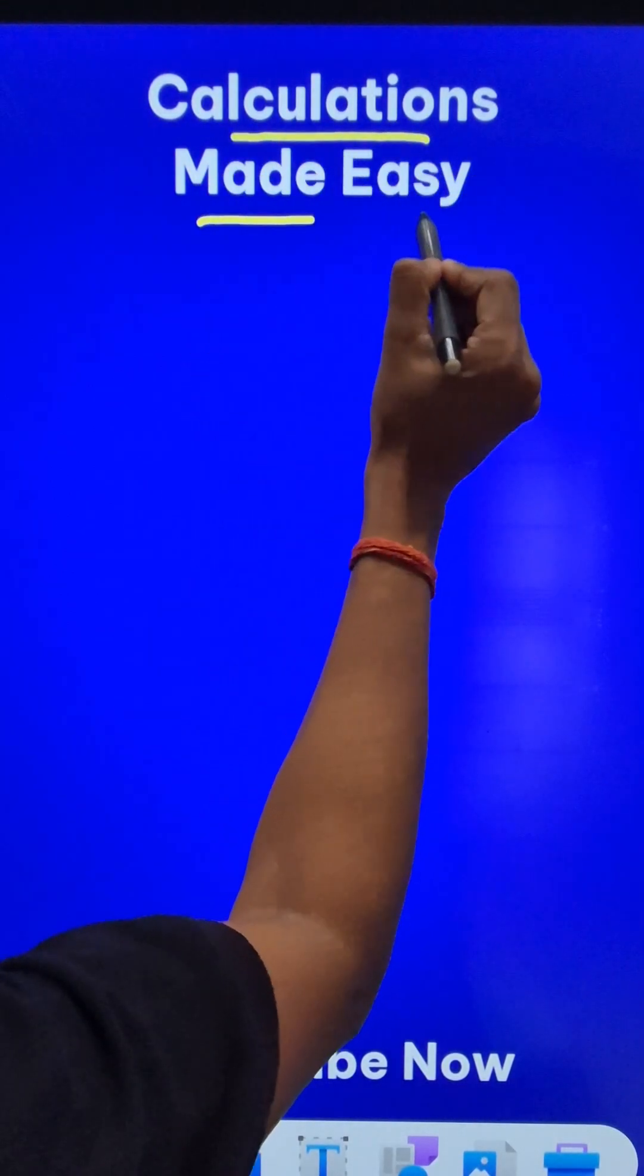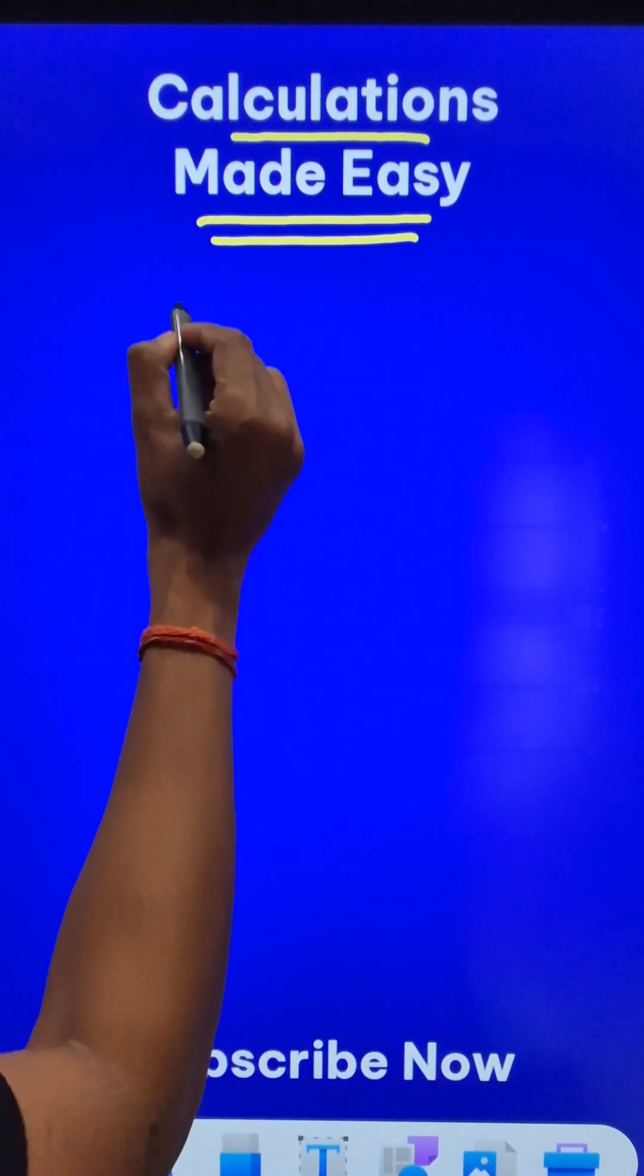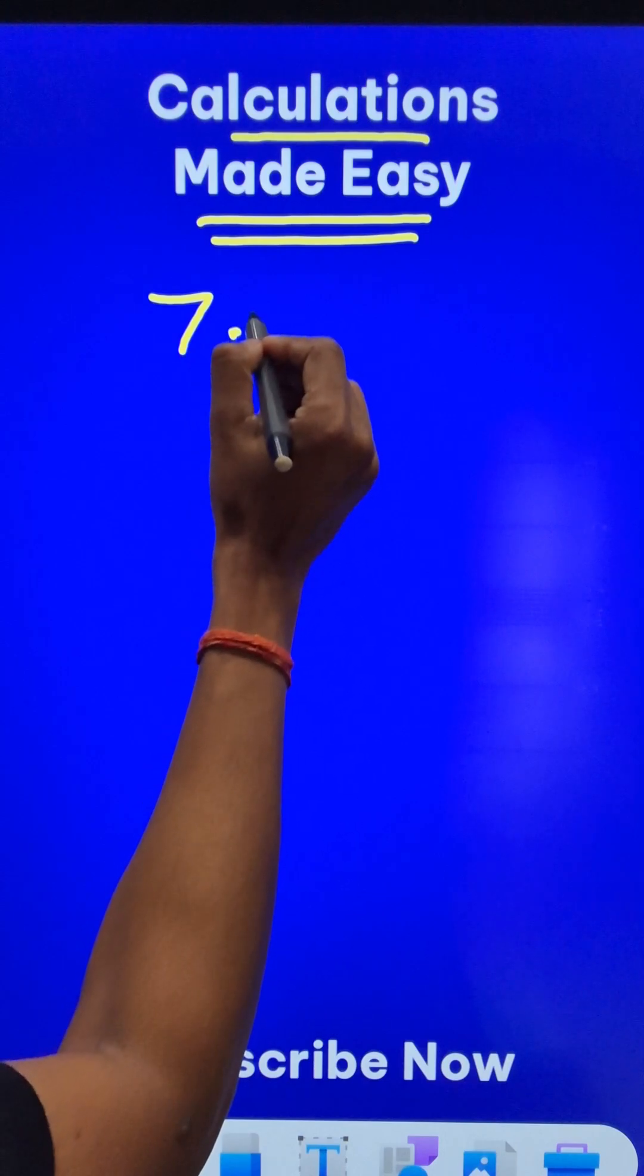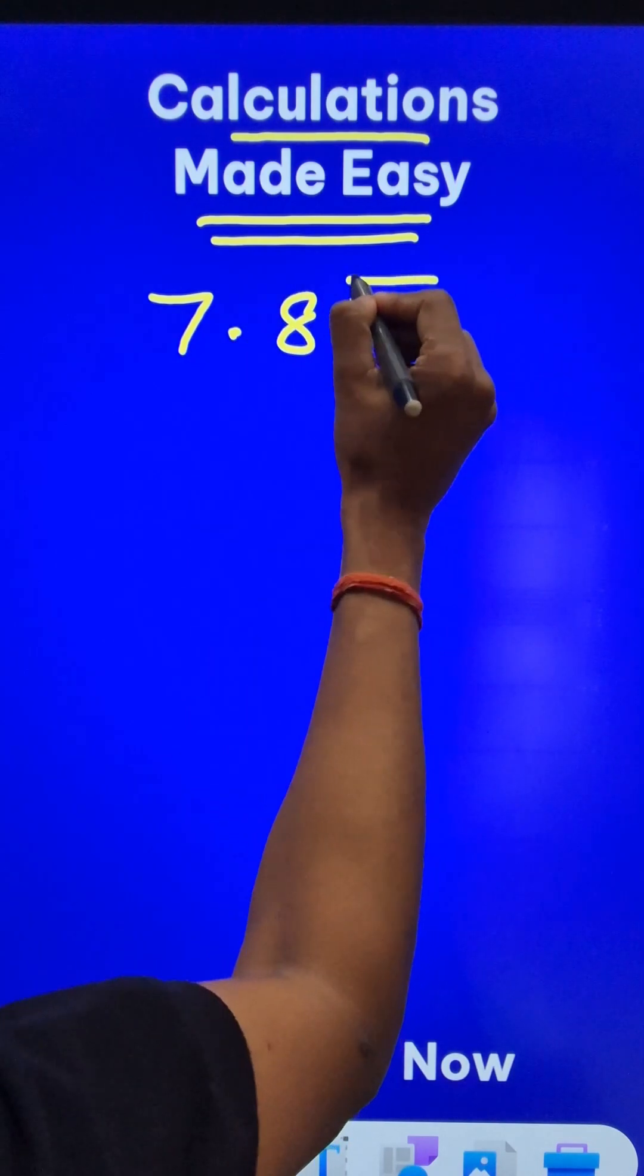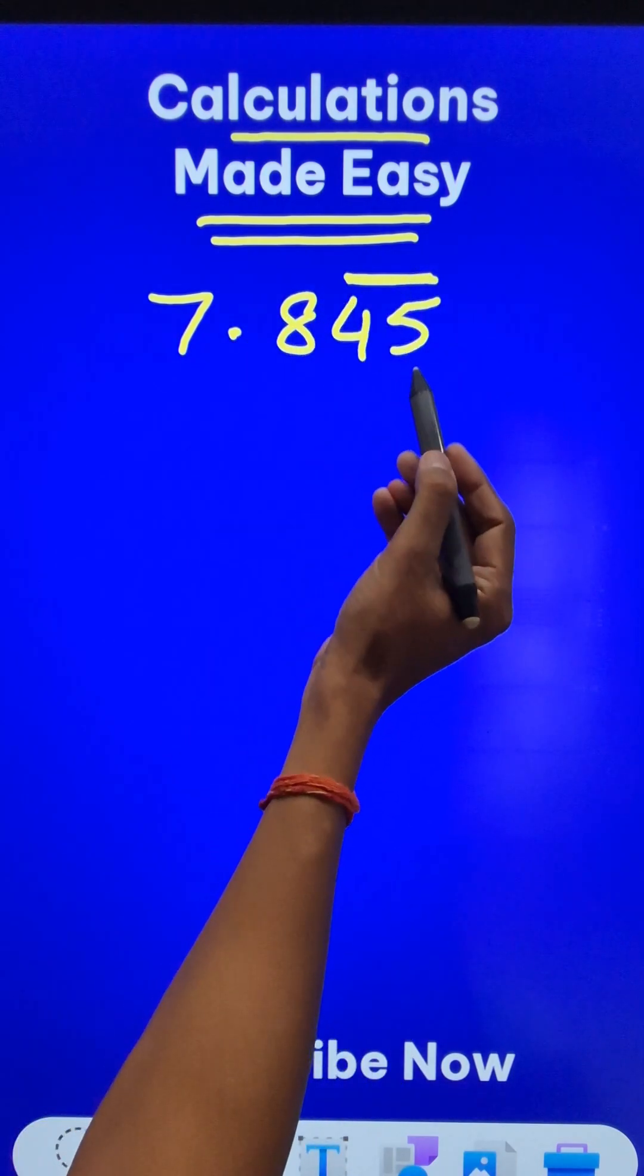Let's learn a smart trick to calculate very easily and quickly. Suppose there is a non-terminating decimal like 7.845 where 45 keeps repeating. So we put a bar over 45.